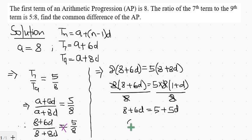Therefore we have 6d minus 5d equal to 5 minus 8. So d equals negative 3.